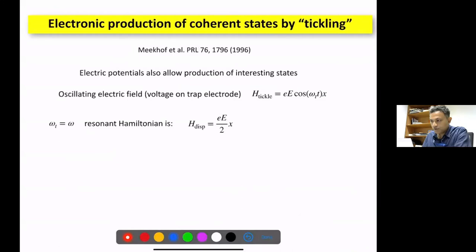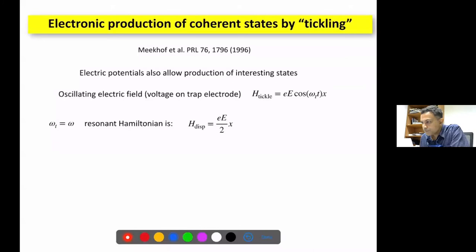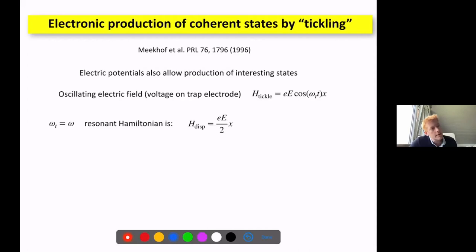Q&A: On the Wigner quasi-probability — can it take values greater than one? The answer is that the maximum value the Wigner function can take is 2/π.